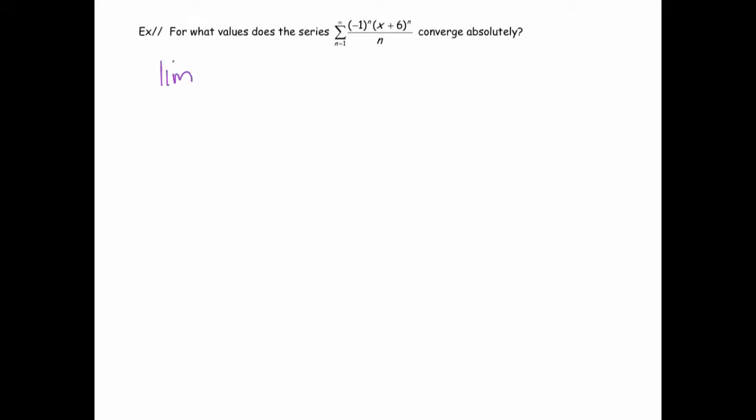The alternating series test also allows us to analyze the endpoints of an interval of convergence when we're analyzing a power series. For example, let's look at this power series — this is an alternating power series. What we'll do is use the ratio test as usual, but when we get to the endpoints, those are going to result in alternating series that we'll need to analyze using the tests that we have.